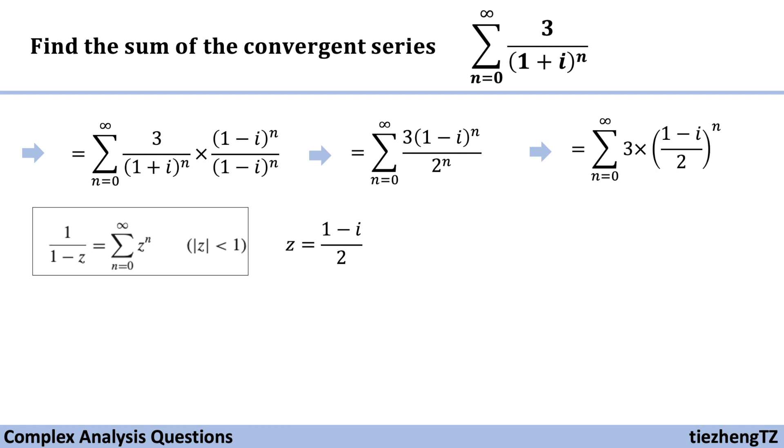And we know this modulus is less than 1. So we can just use this given format to substitute with (1 - i)/2. And this function becomes 3 times 1 over (1 - (1 - i)/2).